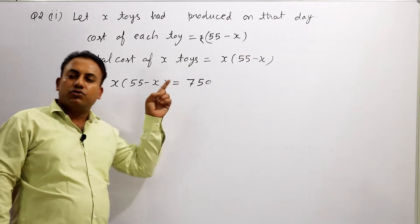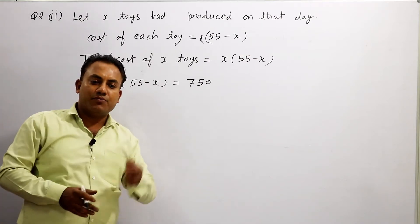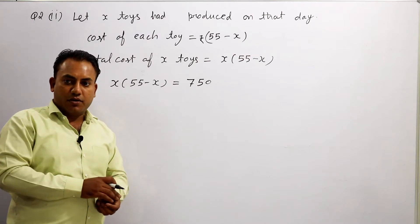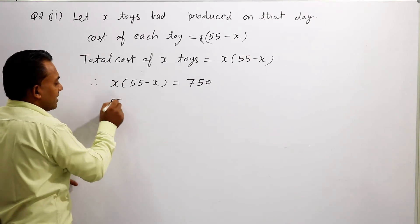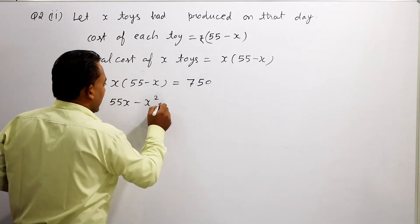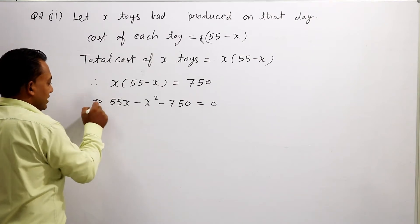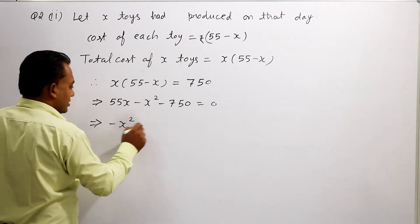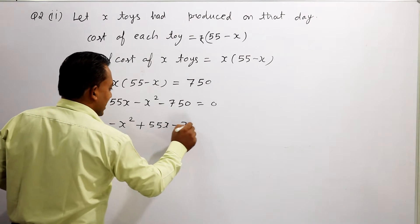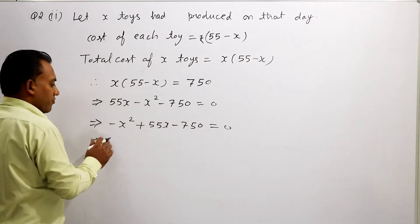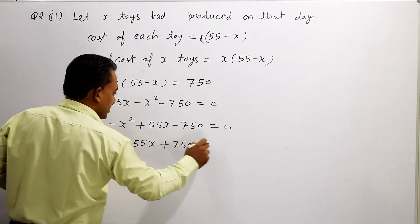किसी दिन total cost x(55 minus x) बनती है, लेकिन question में दिया हुआ है 750. तो इसे solve करेंगे: 55x minus x² = 750. इसे rearrange करते हैं — minus x² plus 55x minus 750 = 0. Minus से multiply करने पर: x² minus 55x plus 750 = 0.